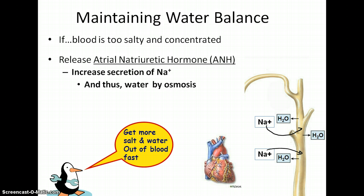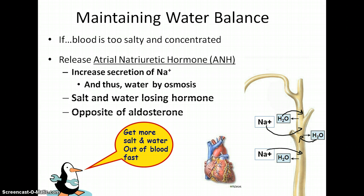Water then follows by osmosis, so we get rid of some water into the urine as well. ANH is a salt and water-losing hormone — we end up excreting them. It does the exact opposite of aldosterone. These are some of the ways we can maintain water balance and osmoregulation as a form of homeostasis, and I hope you found that helpful.